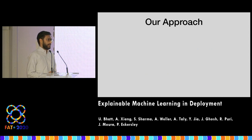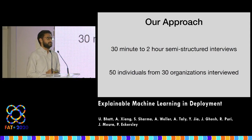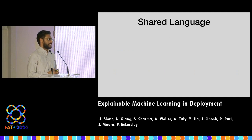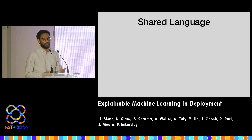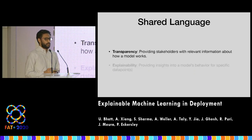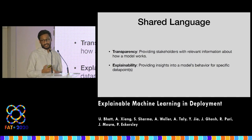Our approach was conducting 30-minute or two-hour semi-structured interviews with over 50 individuals from 30 different corporations. When we started doing these interviews, we realized we'd need a shared language between all of these stakeholders — some were data scientists, some were from civil societies, and some were academics. We defined transparency as providing stakeholders with relevant information for how a model works, and explainability as providing insights into a model's behavior for a particular data point — what would be referred to as local interpretability.